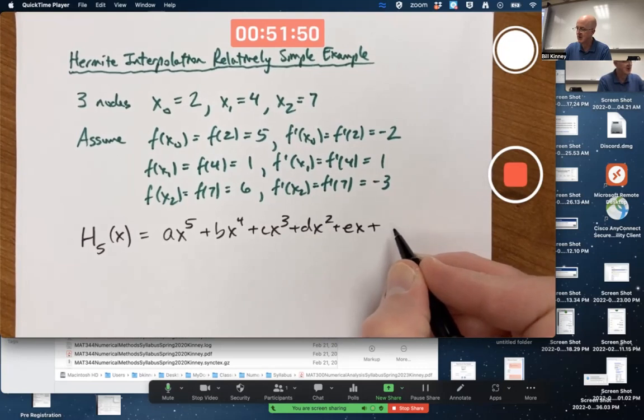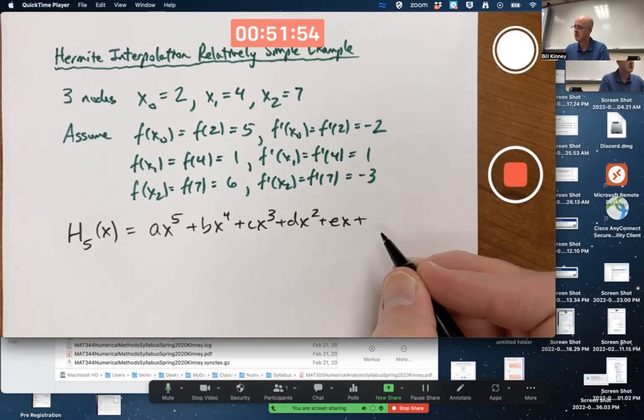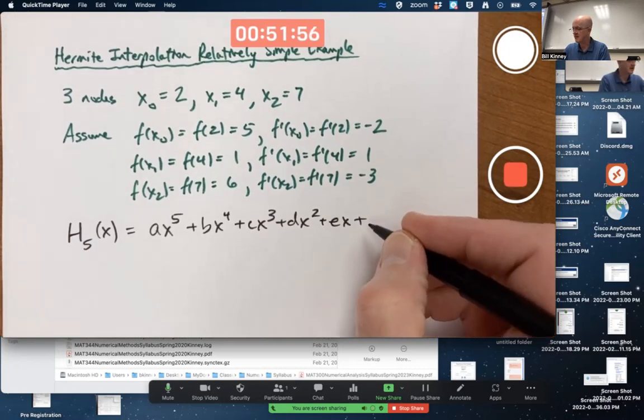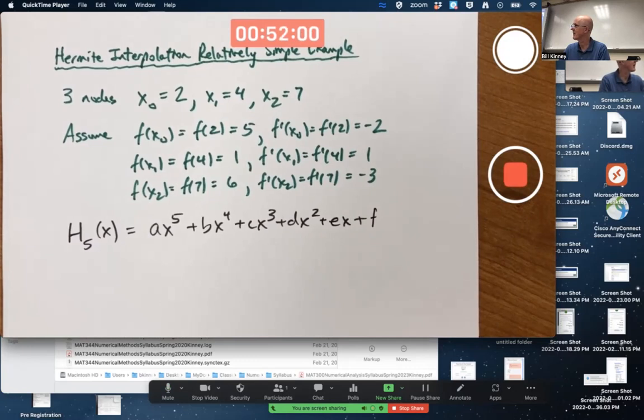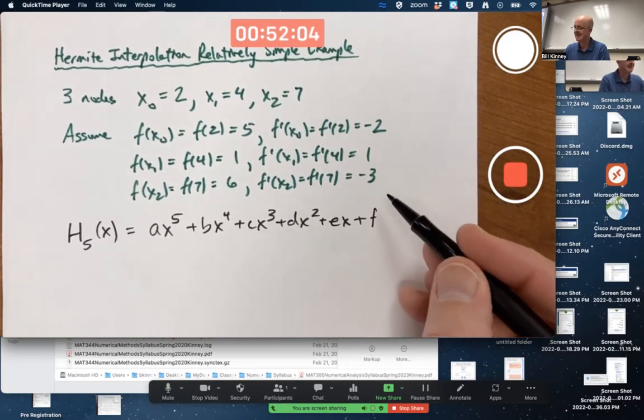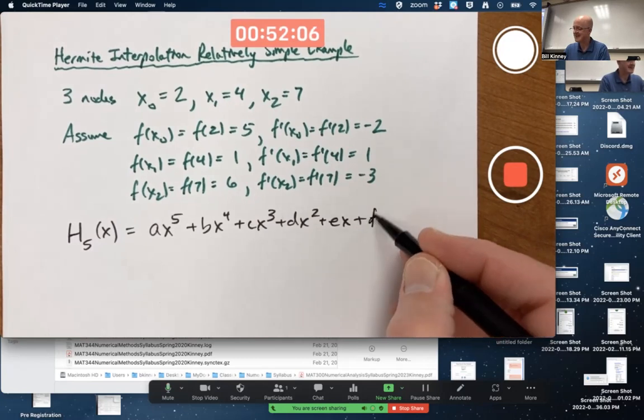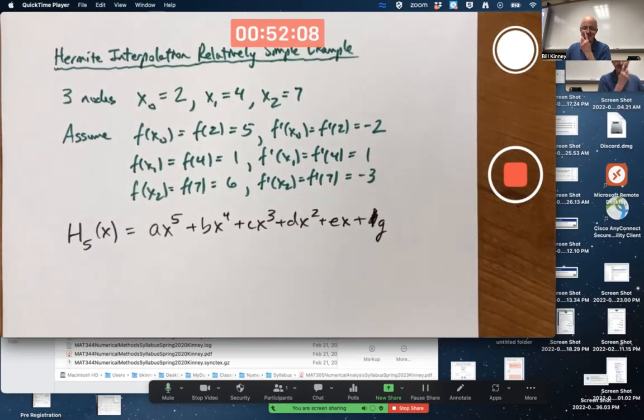should I use an f again? That seems to be a problem. Okay, let's use g. f is a function, g is a number.